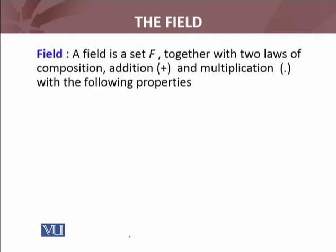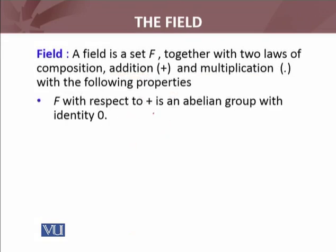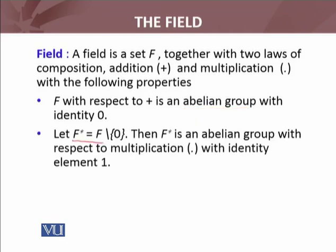A field is a set, together with the two laws, addition and multiplication. With respect to addition, it is an abelian group. With respect to addition, F is an abelian group with identity zero. The non-zero elements of field form an abelian group with respect to multiplication, with identity element one.